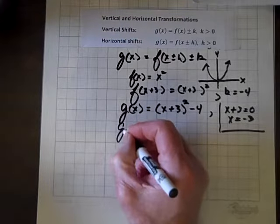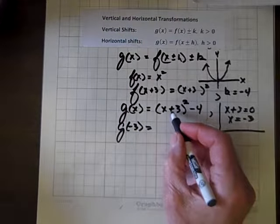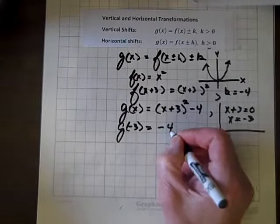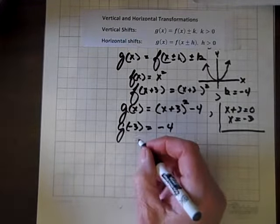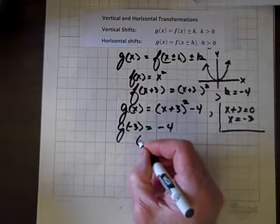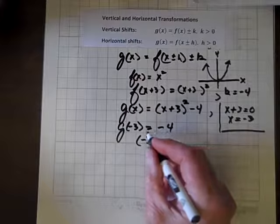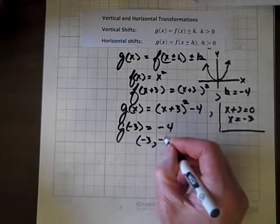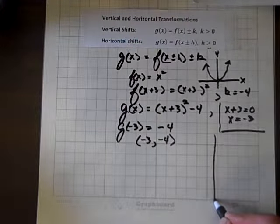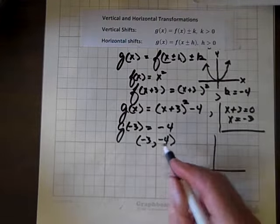So now let's evaluate g of negative 3. And when we do that, of course, this will be zero, and if you square zero, you get zero. And we just get back a minus 4, which results in or corresponds to the ordered pair x is negative 3. And when x is negative 3, y or g of negative 3 is negative 4.